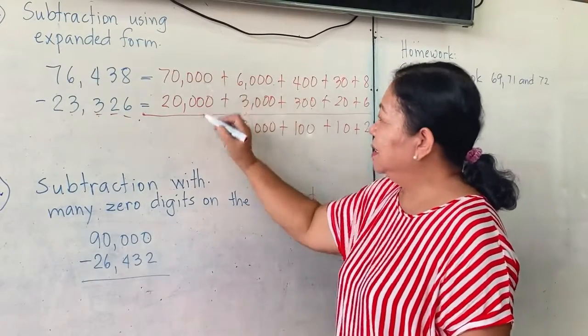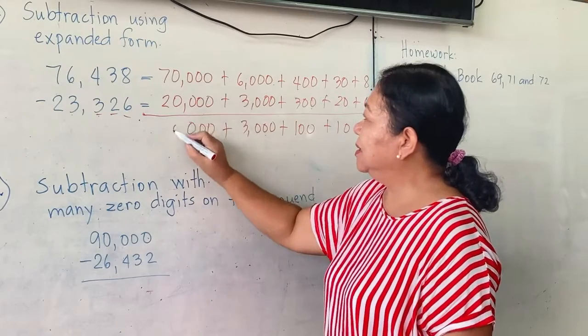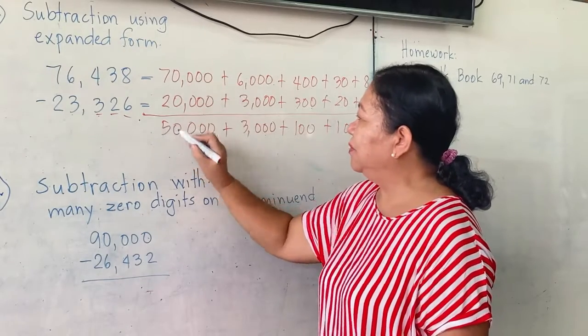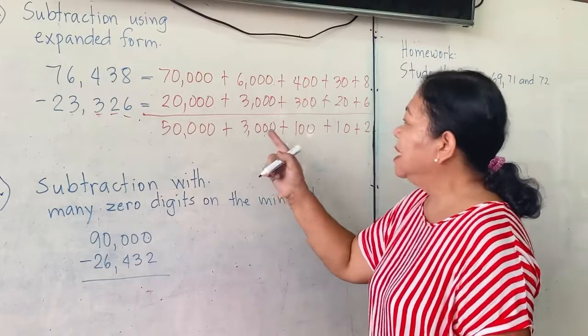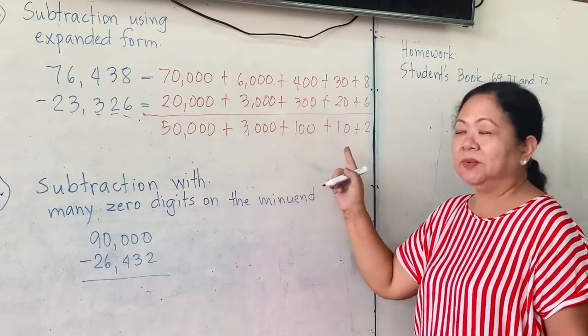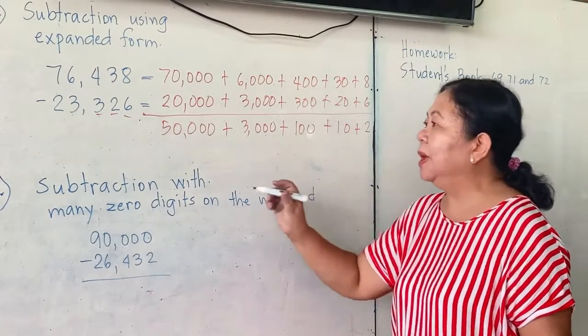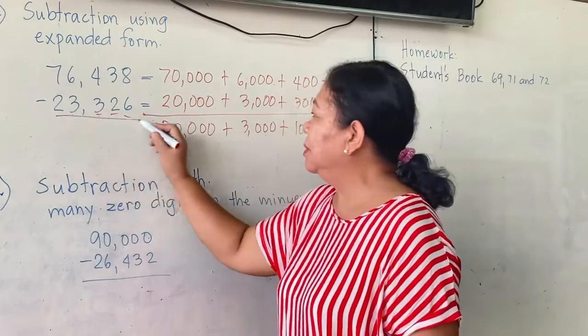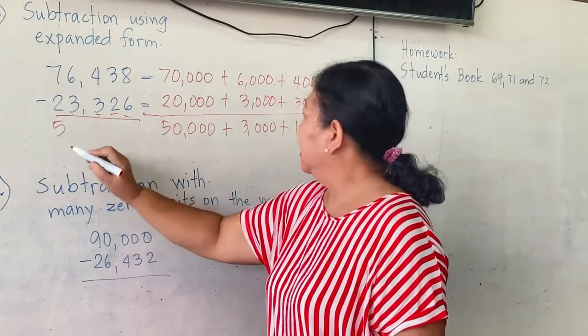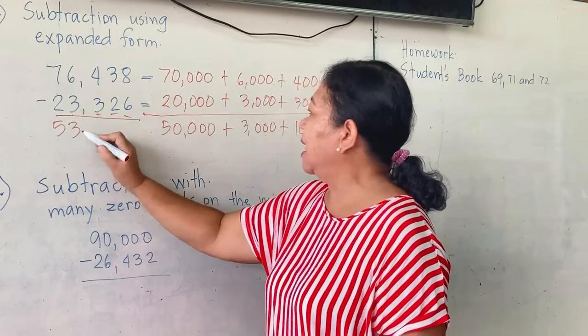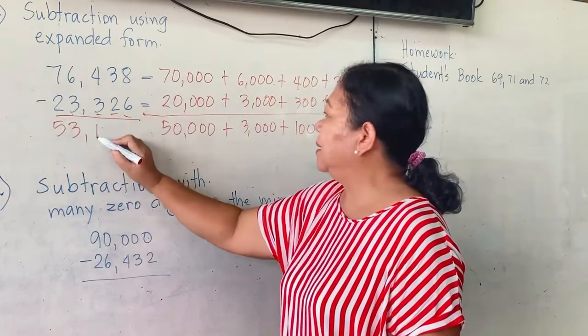And 70,000 minus 20,000: 7 minus 2 is 5. Therefore, the answer is 50,000 plus 3,000 plus 100 plus 10 plus 2. And this is equal to 53,112.